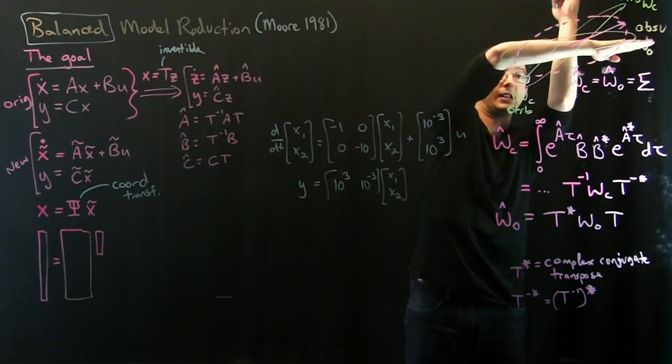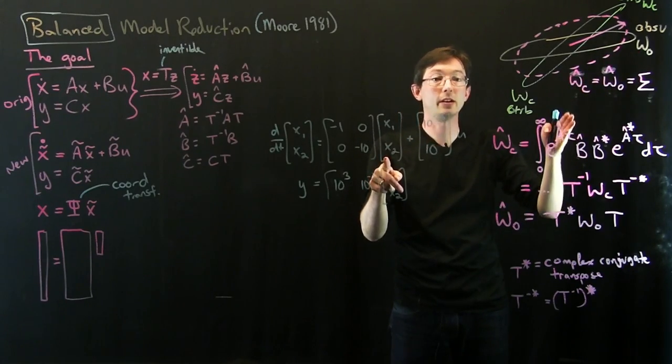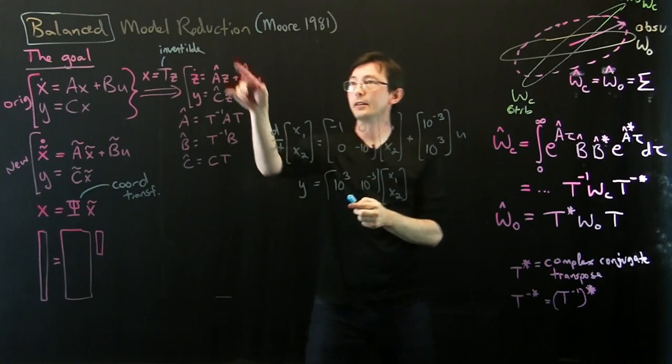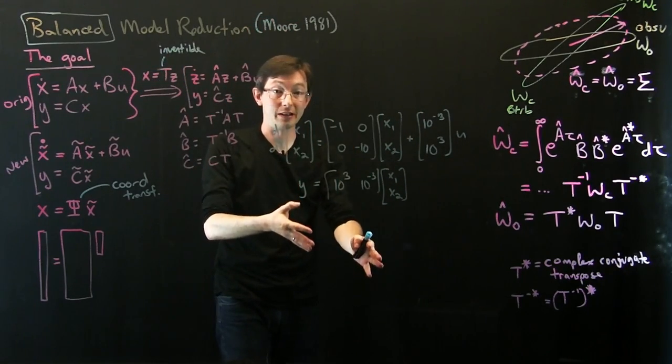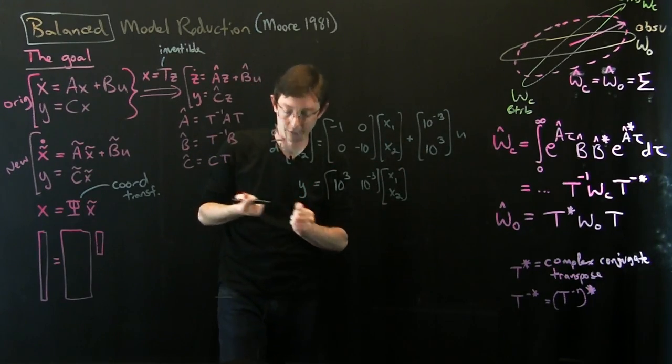So these would be kind of perpendicular Gramians where x2 is much more controllable than x1, and x1 is much more observable than x2. And this simple example is going to show us how a T matrix could actually make this balanced and find a state that's equally controllable and observable.